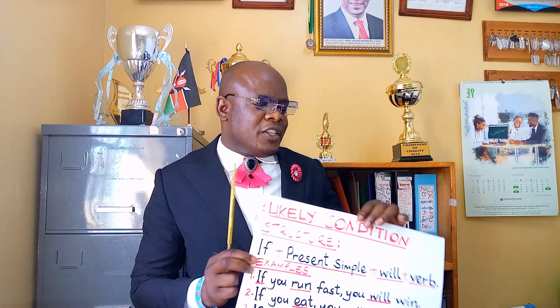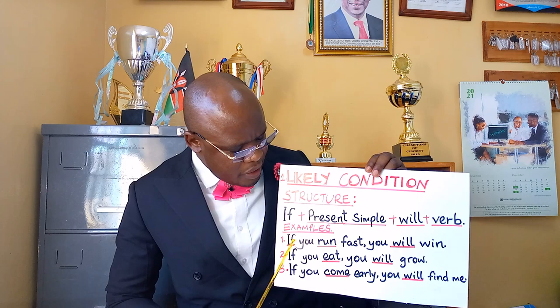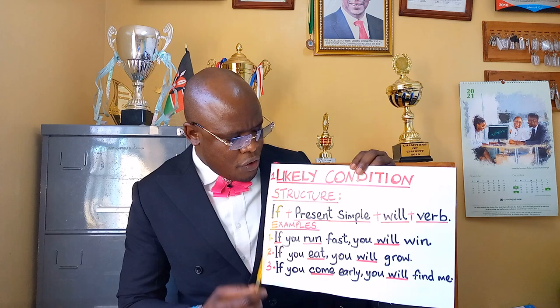Starting with the likely conditional sentence — if you run fast, you will win — if you change that sentence to the unlikely condition, you get: if you ran fast, you would win. And the impossible condition would be: if you had run fast, you would have won.